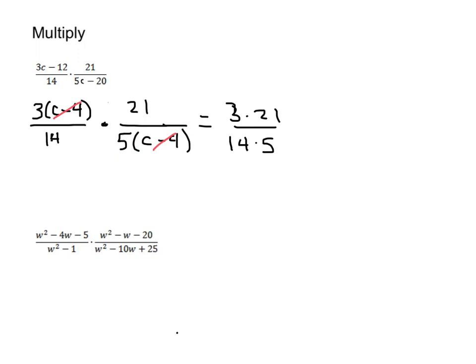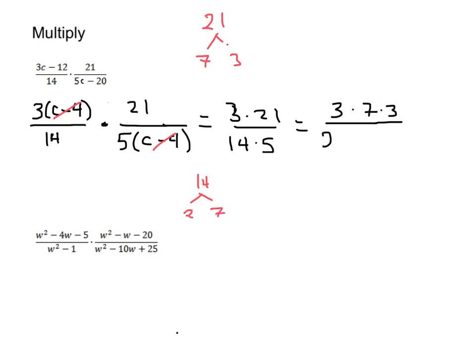Before I multiply these numbers together I think I can cancel some stuff out. So I'm going to write everything as a prime factorization. 3 is still just 3. The prime factorization of 21 — we can write 21 as 7 times 3. So over here this is going to be 3 times 7 times 3. On the bottom, 14 can be represented as 2 times 7, so I'm going to write 14 as 2 times 7, and then we still have that 5 down there.